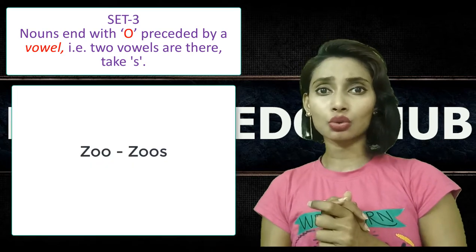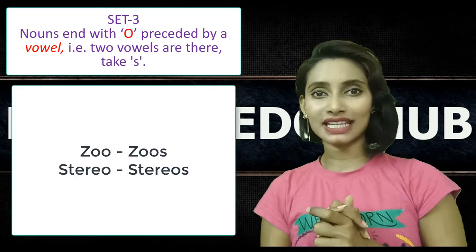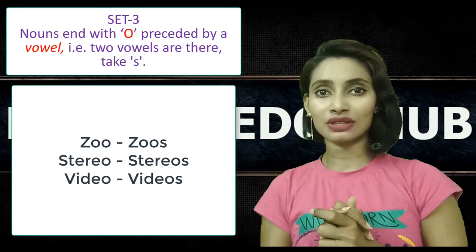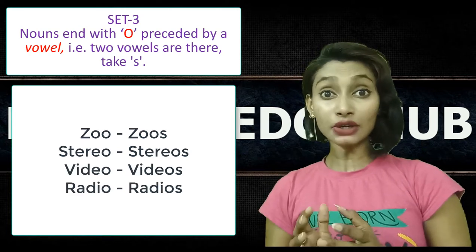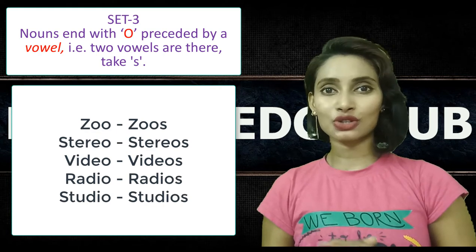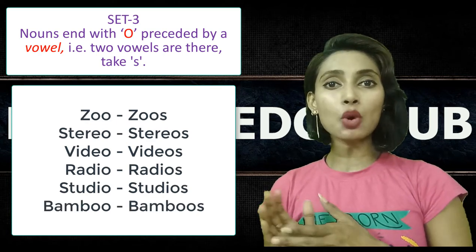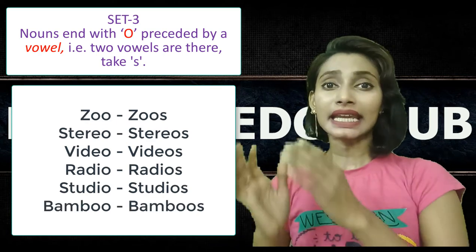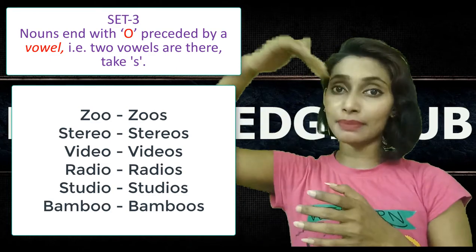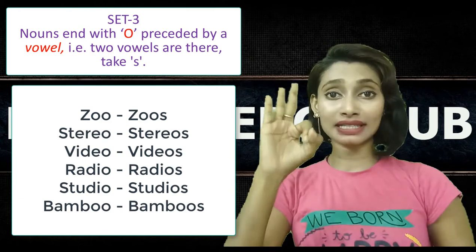For example: zoo, zoos; stereo, stereos; video, videos; radio, radios; studio, studios; bamboo, bamboos. These nouns end in letter O preceded by a vowel, hence we added S. So this is our set 3.